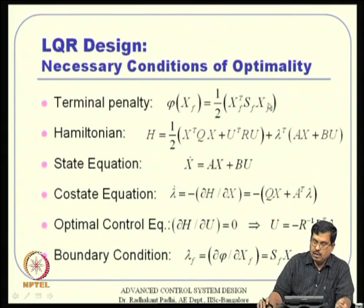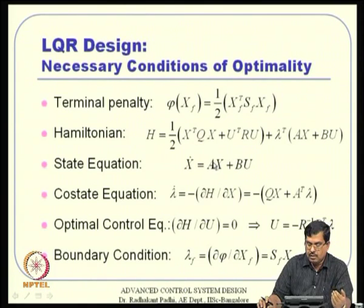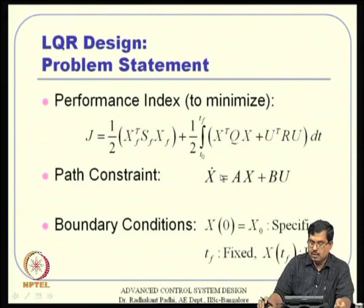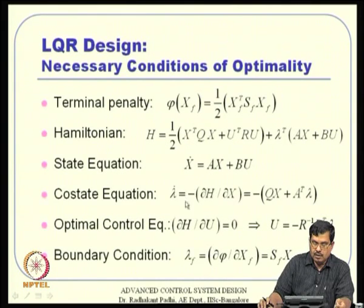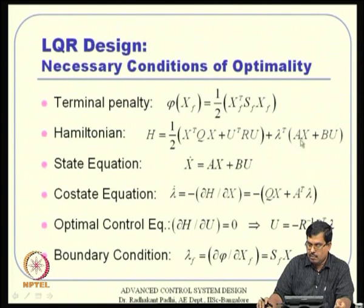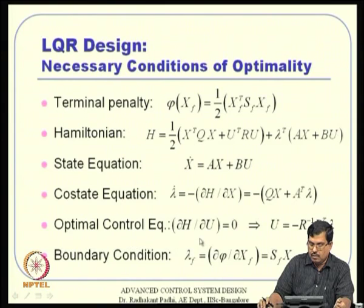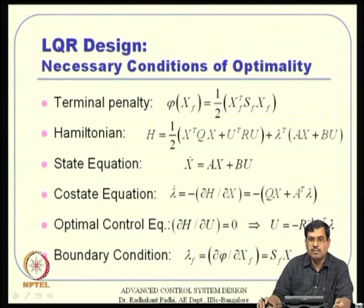This leads to the three famous conditions: state, costate, and optimal control equations. The state equation was already known; the costate equation is lambda-dot = -∂H/∂x, which gives lambda-dot = -QX + A-transpose × lambda. The optimal control equation ∂H/∂U = 0 gives U = -R⁻¹ B-transpose × lambda. The whole problem is to find lambda; once we have lambda the control is determined.